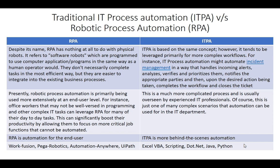Despite the name, RPA has nothing to do with physical robots. When we say robotic process automation, you might think it involves physical robots doing physical tasks — that's not the case. It refers to software robots which are programmed to use computer applications and other programs in the same way as a human operator would. They don't necessarily complete tasks in the most efficient way, but they are easier to integrate into existing business processes.